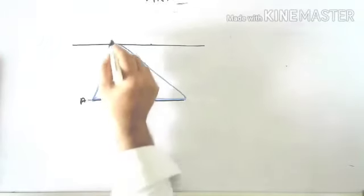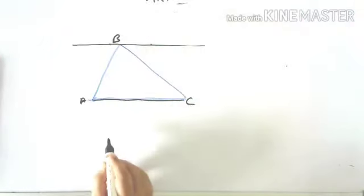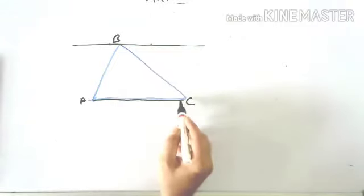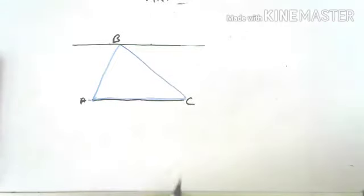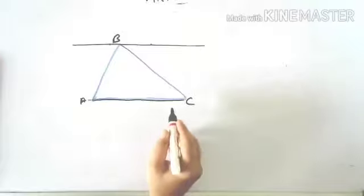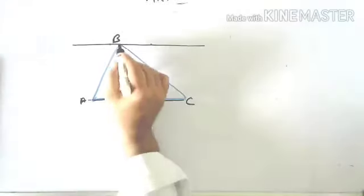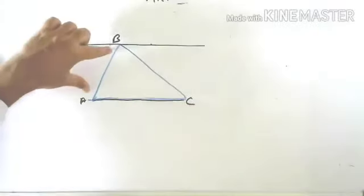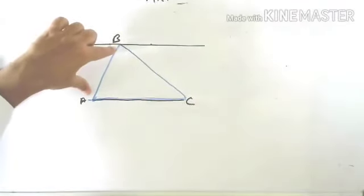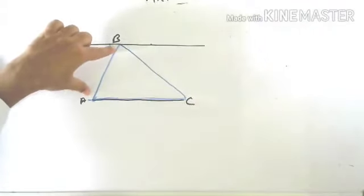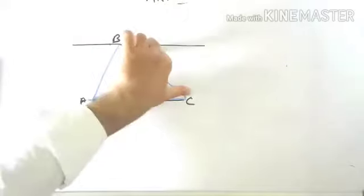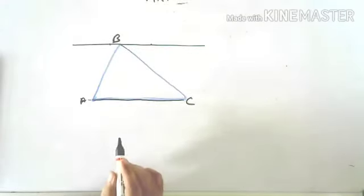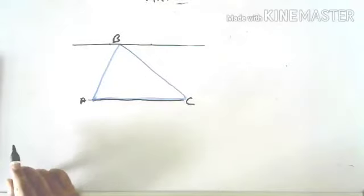We're doing this triangle ABC. We're doing this triangle like an isosceles triangle. The two sides are the same — the length is the same. We're doing this isosceles triangle, so we will have the same area.